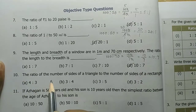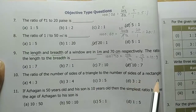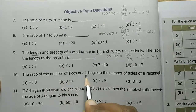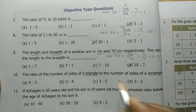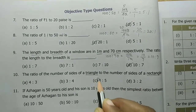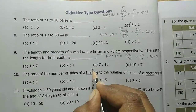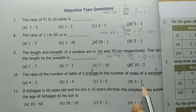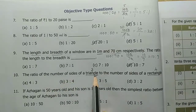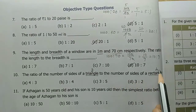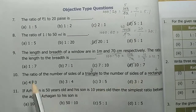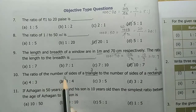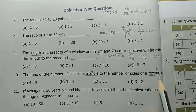Fourth one: the ratio of the number of sides of a triangle to the number of sides of a rectangle is dash. A triangle has 3 sides and a rectangle has 4 sides. So the ratio is 3 is to 4, option B.